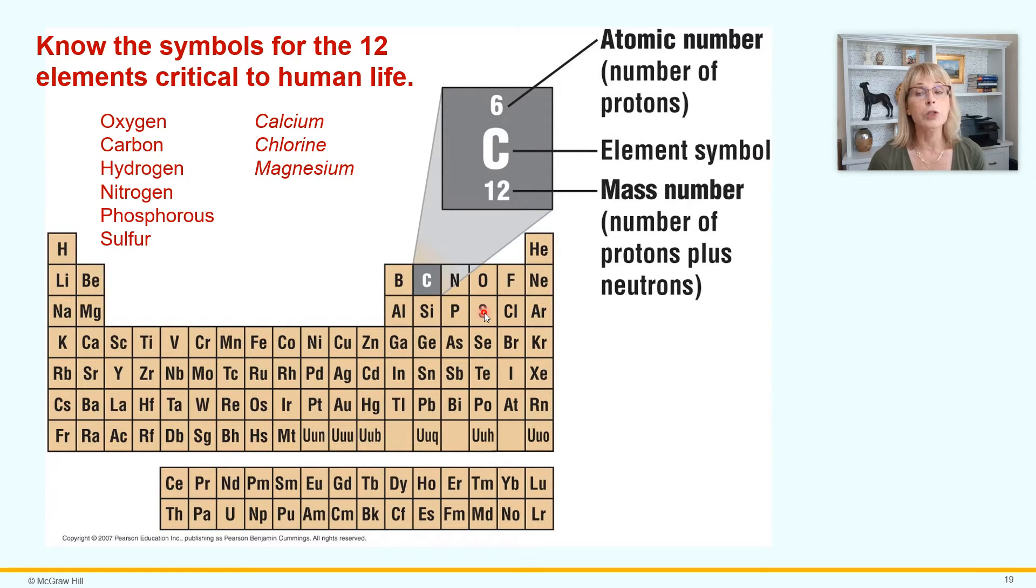Now these three, these are pretty easy. The letter C got used as the symbol for carbon. So what are we going to do with calcium and chlorine? Well, for calcium, we made it Ca. And for chlorine, we made it Cl. Magnesium? Magnesium is Mg. Those are pretty easy.